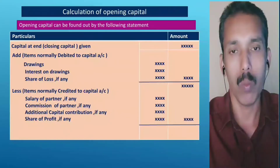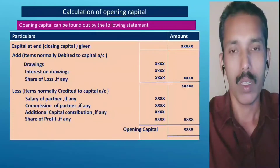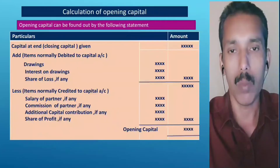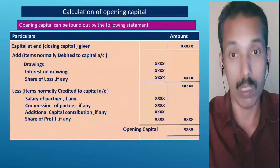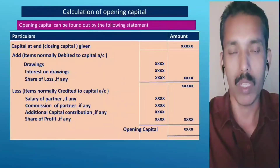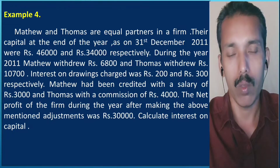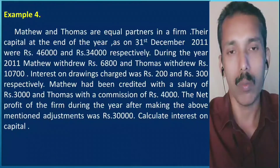The closing capital is positive. The opening balance is the missing figure. To calculate: start with closing capital, add debit items — drawings, interest on drawings, share of loss — and deduct credit items — salary, commission, additional capital, share of profit. The result is the opening capital. Once calculated, compute interest for one year.